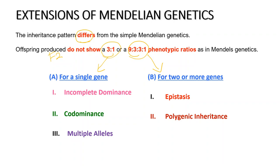Under extension of Mendelian genetics, we're going to look into incomplete dominance, co-dominance, multiple alleles, as well as epistasis and polygenic inheritance.